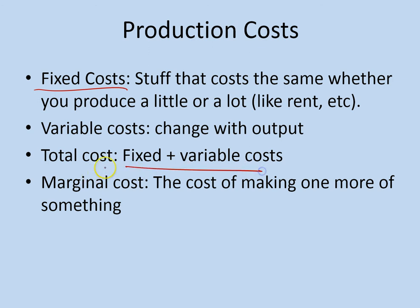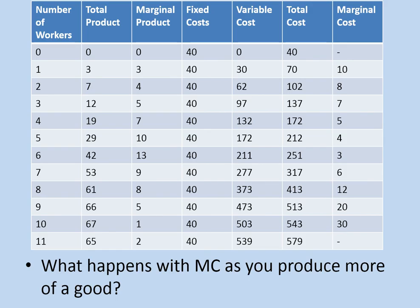The total cost is simply the fixed plus the variable costs. The marginal cost — again, 'marginal' means one more or one less of something — in this case it's how much it costs to produce one more unit. Here you can see on the chart what the marginal cost of each unit is. So we go from 40 to 70, which is a difference of 30, divided by 3 units of product, giving us 10. But I won't make you calculate this.